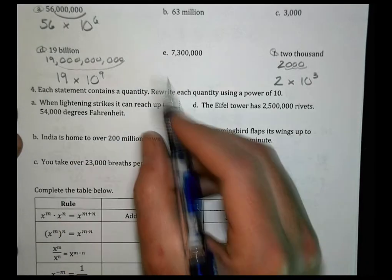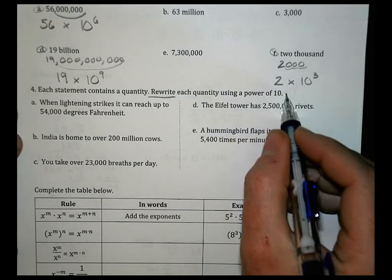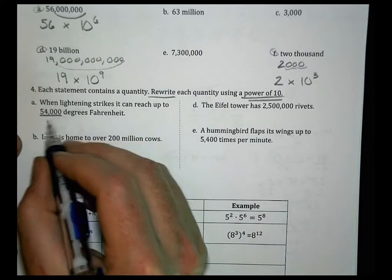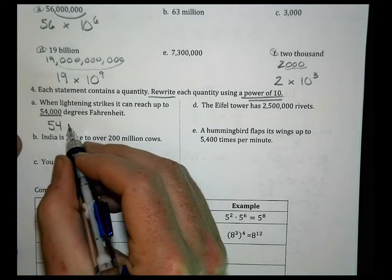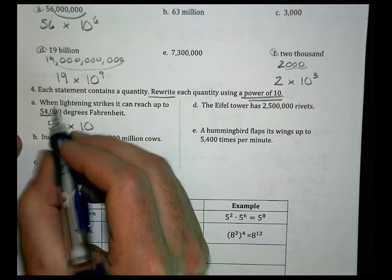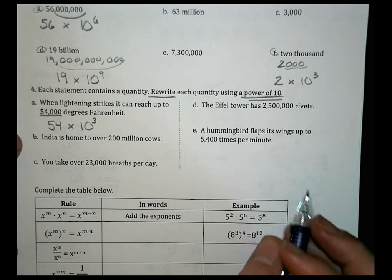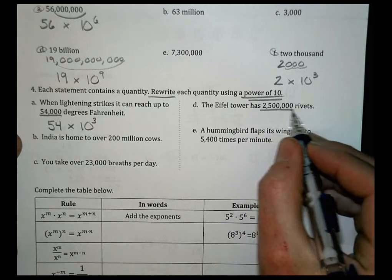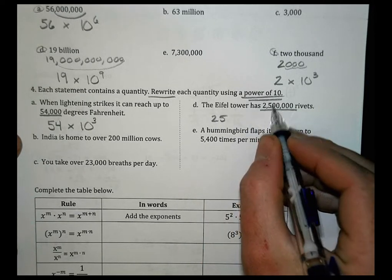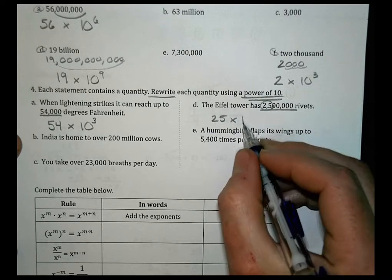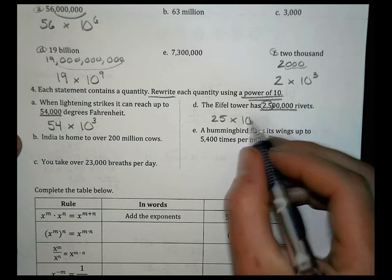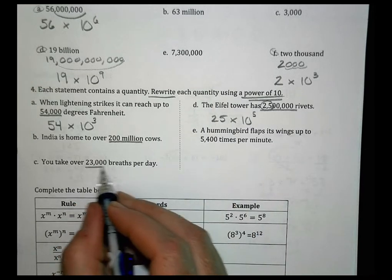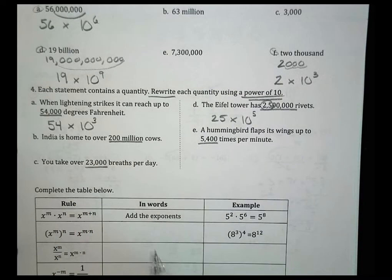Number 4. Each statement contains a quantity. Rewrite each quantity using a power of 10. When lightning strikes, it can reach up to 54,000 degrees Fahrenheit. So we take the main numbers, 54, and multiply it by a power of 10. In our case, 1, 2, 3 zeros, so 10 to the third power. For D, the Eiffel Tower has 2,500,000 rivets. So we write 25 multiplied by 10 to the 1, 2, 3, 4, 5th power. Here are the numbers for the remaining problems. Same pattern for those.